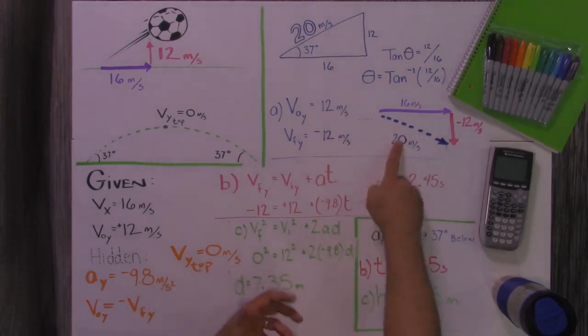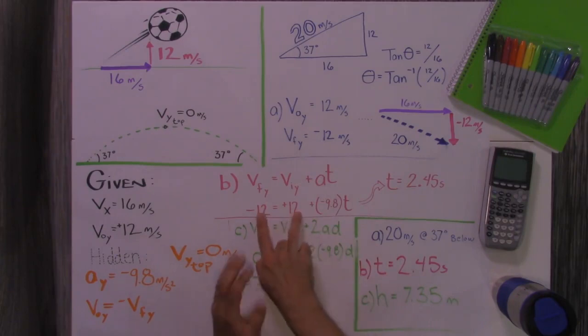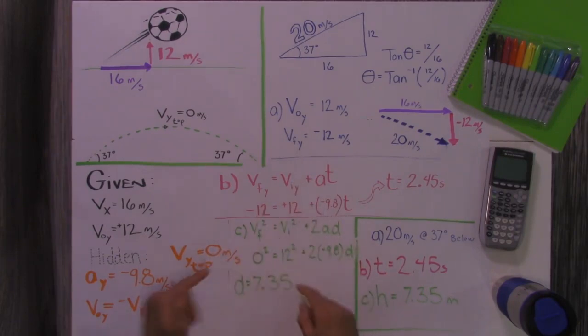All right. So how fast was it going when it hit the ground? 20. Next, how much time did it spend in the air? Well, I'm going to use the same hidden given. I'm going to remember that the initial velocity is upward at 12 and the final velocity is downward at 12.